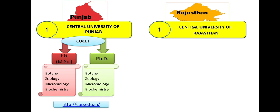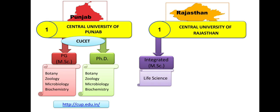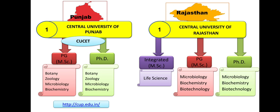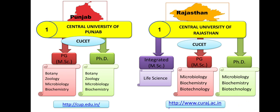In Rajasthan Central University, there is integrated MSc — that is BSc plus MSc in Life Science only. Also, standalone MSc in Microbiology, Biochemistry, and Biotechnology. PhD is available again in Microbiology, Biochemistry, and Biotechnology. Admission will be through CUCET. The website is provided.